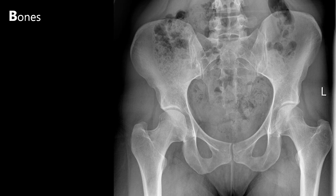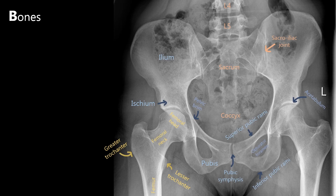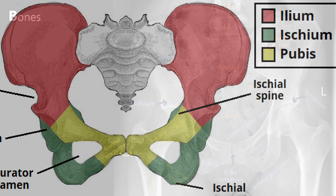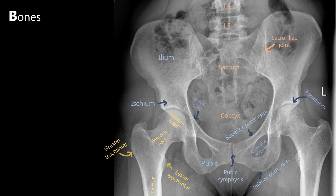Next is bones. For this, we need to know the bony anatomy as highlighted here. We should be able to visualise the lower lumbar vertebrae, sacrum and coccyx. The pelvis is also visible and is split into three anatomical parts: the ilium, ischium and pubis. The two femurs communicate with the pelvis at the acetabulum, forming the acetabular joint. To assess bones, we need to systematically go through each bone, assessing the outer cortex and bony texture, comparing left and right for any asymmetry, which will help us pick up on abnormalities.